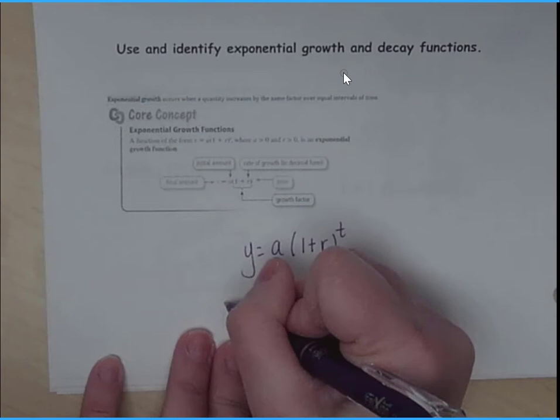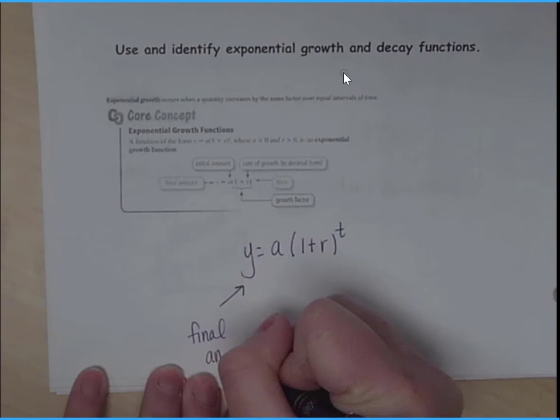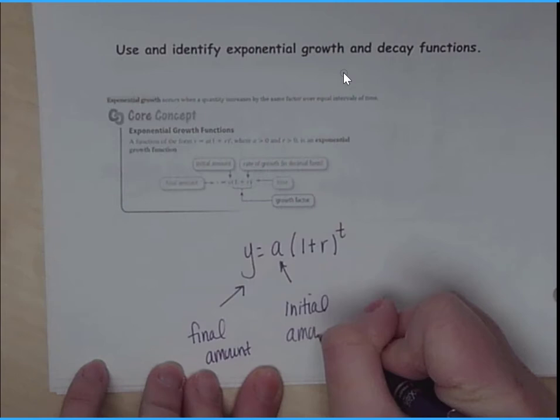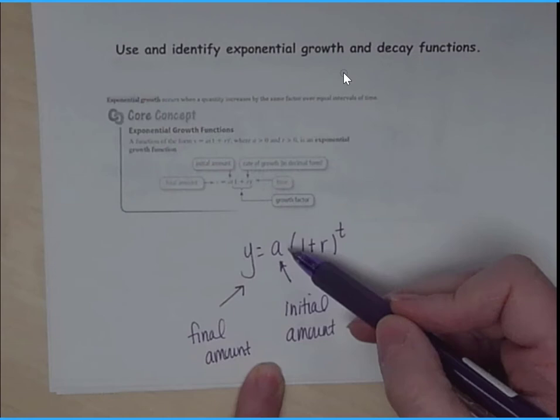So this y, this is our final amount. This is going to be kind of like our final answer here. Now the a, that's the initial amount. That's what we started with.